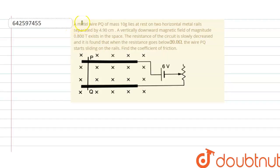Hello everyone, let's solve the question. The question says a metal wire PQ of mass 10 grams lies at rest on horizontal metal rails separated by 4.9 cm.